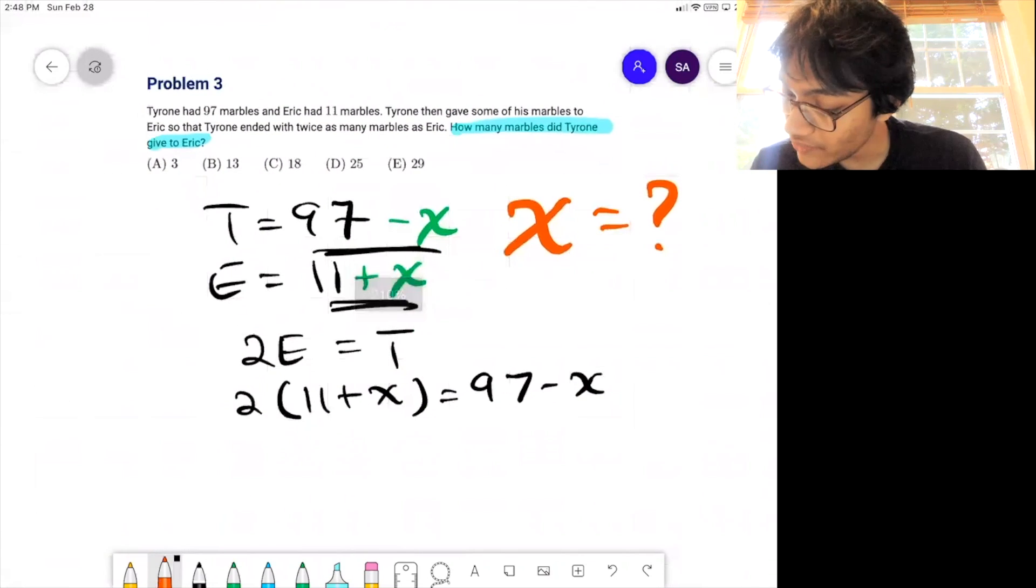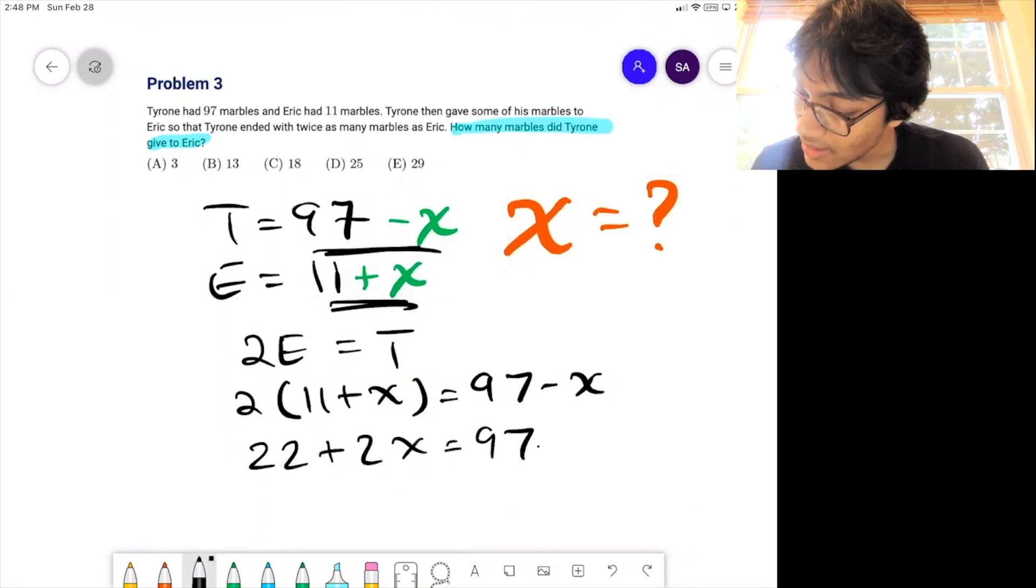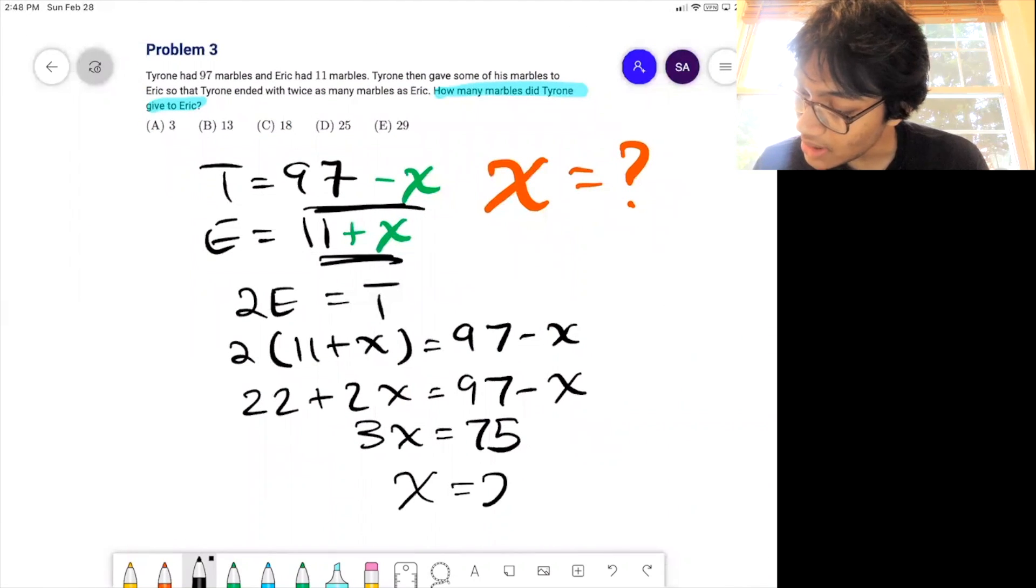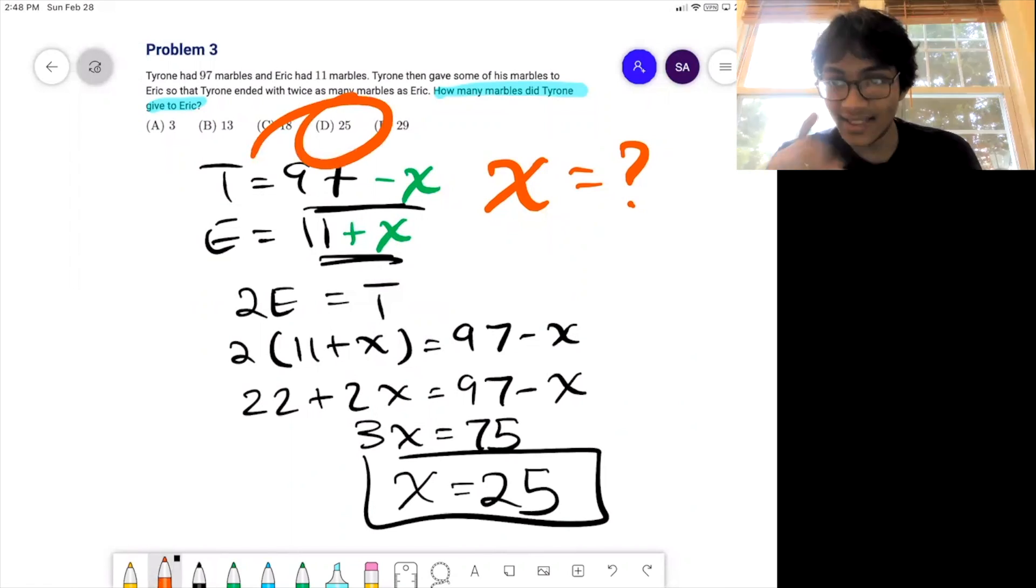Alright, so let's solve this equation. Very nice. 22 plus 2x is equal to 97 minus x. So let's see, 3x is equal to 75. So stands to reason that x must be 25, for a nice choice D, ladies and gentlemen.